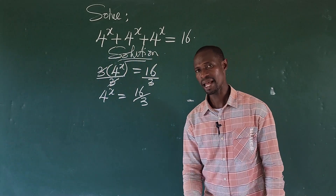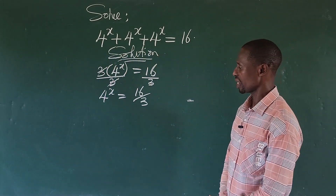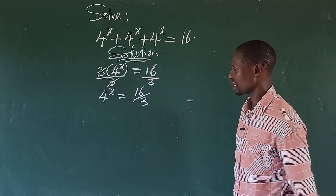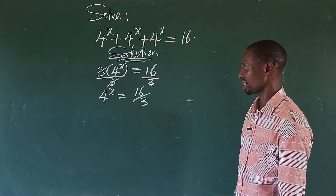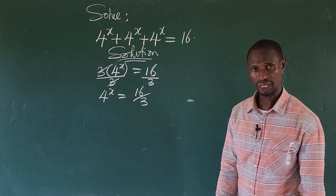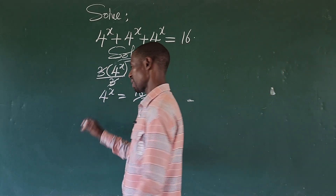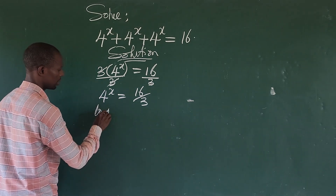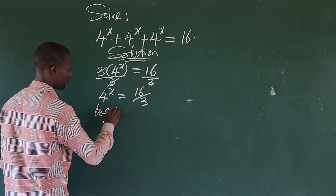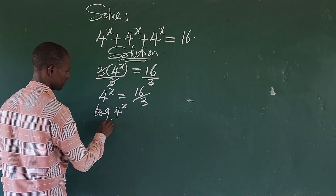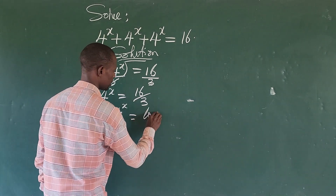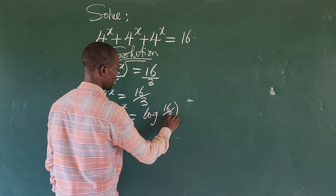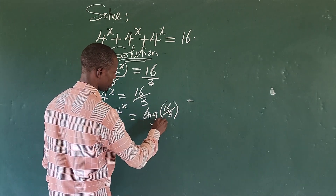Okay, so how do we get our x here? The first thing we do is take a log of both sides of the equation. What base are we going to use? We're going to take log base 4. So we get our x from here — let's take log base 4. So we'll have log base 4 of 4 to the power of x equals log base 4 of 16 over 3.